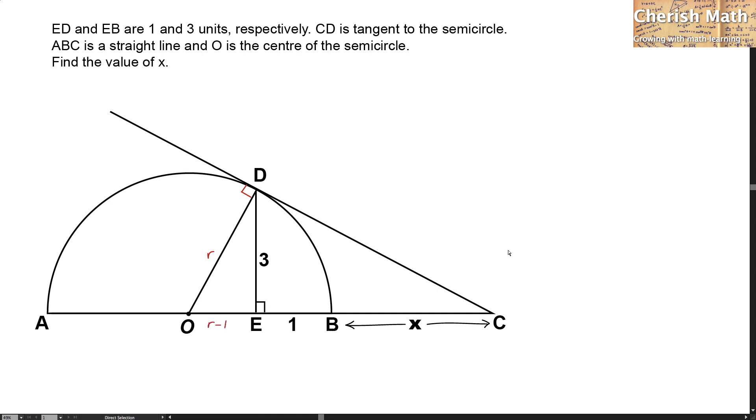By referring to the triangle ODE, I'm going to use Pythagoras' theorem to find the value of the radius R. This is the rule. I have to expand it and this is how it turns out. Now the value of R is equal to 5.